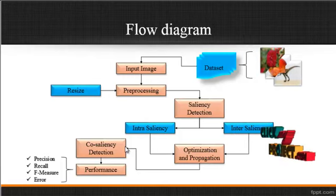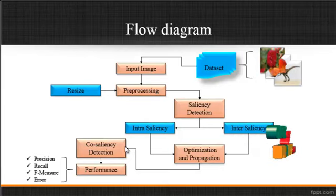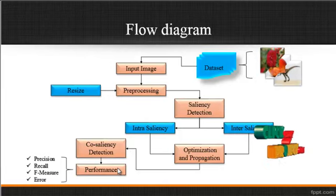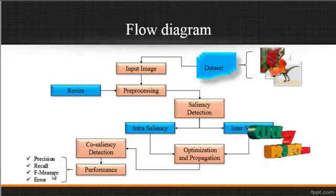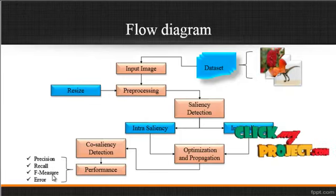In the co-saliency detection, the required object — that is, the region of interest — is extracted, and the background regions are suppressed. After the segmentation, the performance is estimated using parameters like precision, recall, F-measure, and error. By using these parameters, we can justify whether our process is efficient or not.